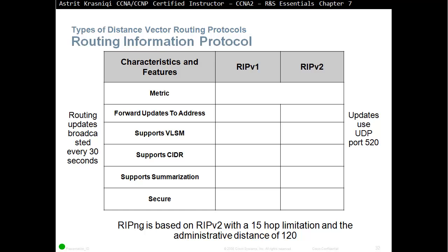Imagine every 30 seconds your printer is getting a bunch of routing updates. What is your printer going to do with that? Nothing — it's going to just ignore it. You are wasting the printer's power, bandwidth, and CPU resources because devices have to read these updates. RIPv1 sends every 30 seconds, while RIPv2 sends to the multicast address so only RIP-speaking routers will hear it. Both send updates unreliably — there's no acknowledgement — to UDP port number 520.